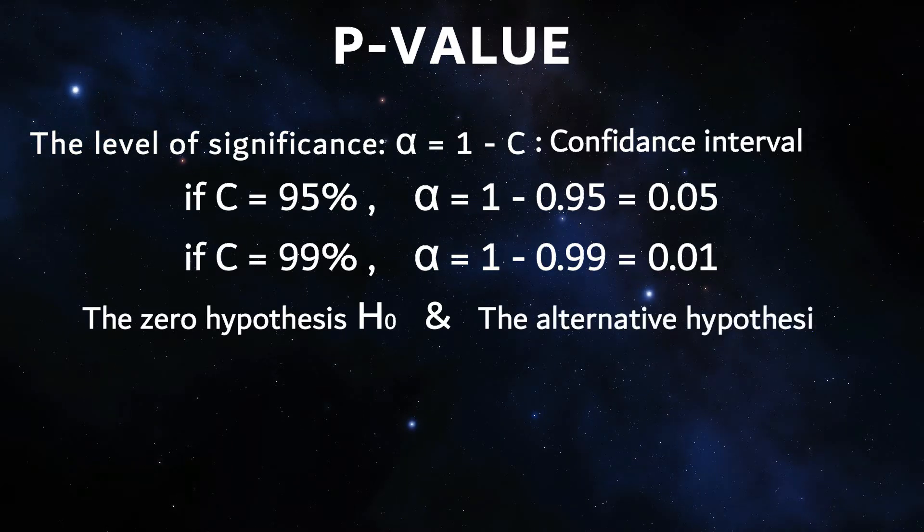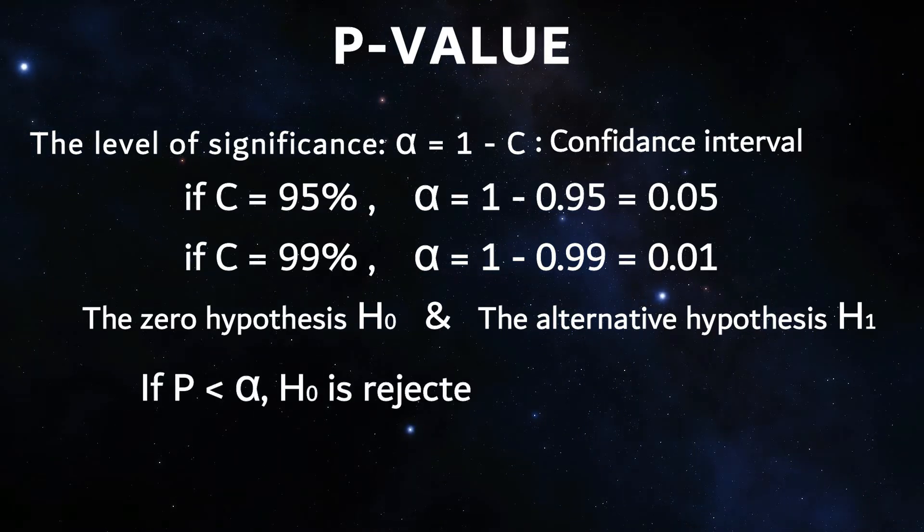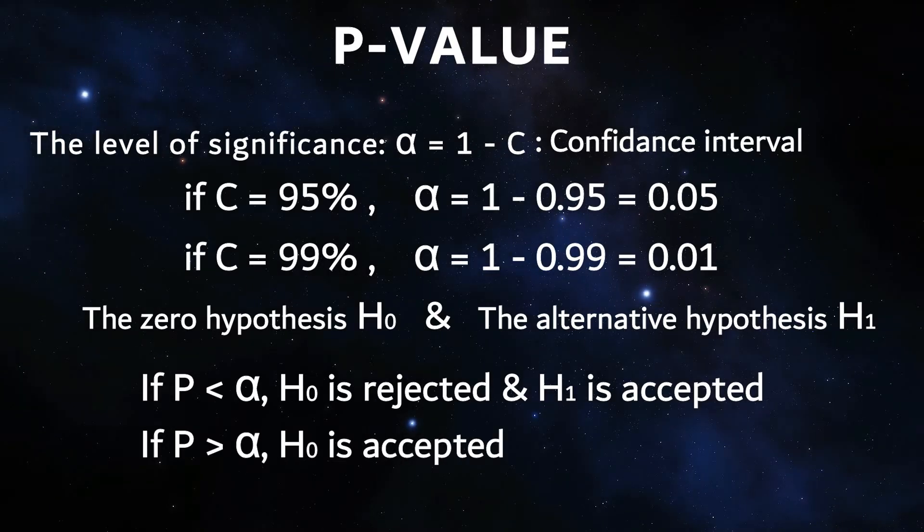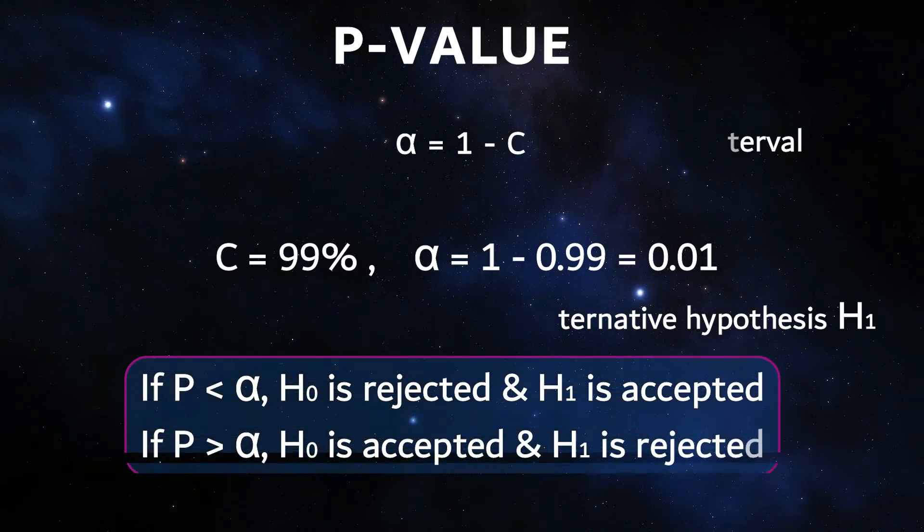If the p-value of a factor is smaller than the level of significance or alpha, then you can reject the zero hypothesis and assume the alternative hypothesis H1, which means that the factor is significant. But if the p-value exceeds the alpha value, you have to accept the zero hypothesis for the time being, which means that the factor is not significant.